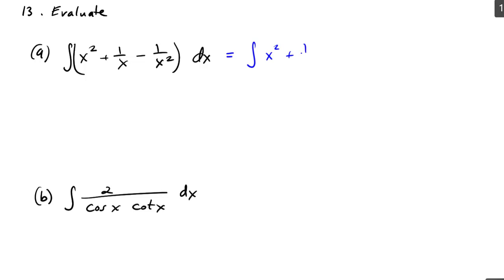of x squared plus 1 over x, I can leave like that because I know what that's going to integrate to, and then minus x to the minus 2. I'll rewrite that part of it. So when I integrate x squared, that's x to the third over 3,